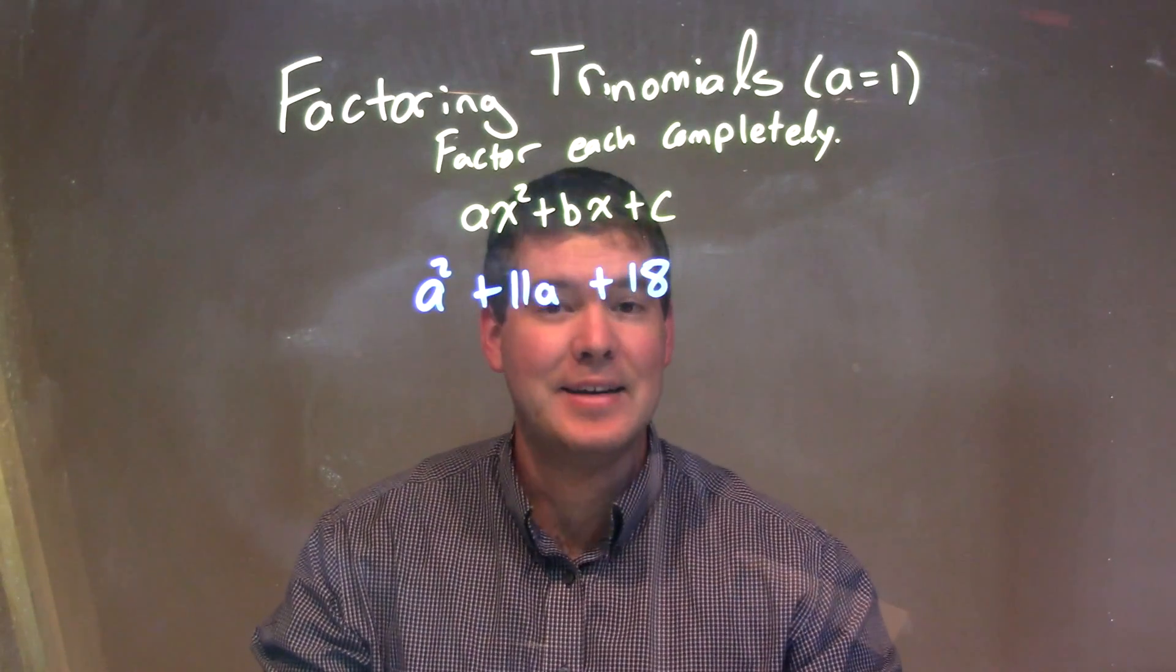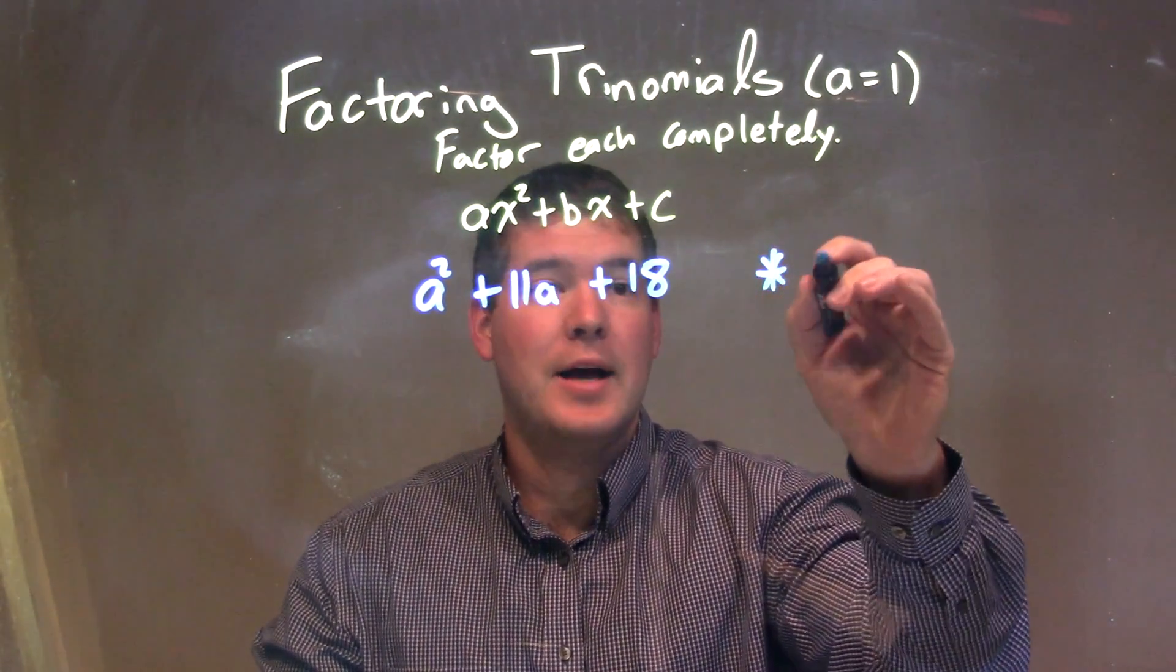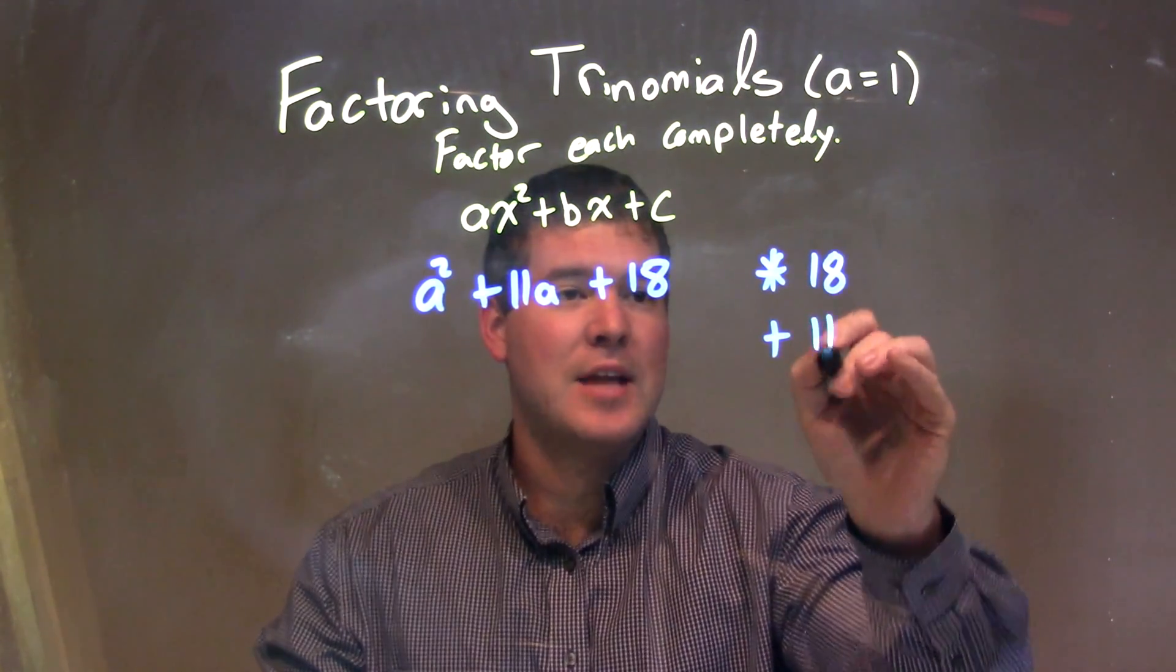Okay, so a squared plus 11a plus 18. I'm going to ask myself the question, what two numbers multiply to be 18, my c value, but add to be my b value, which is 11.